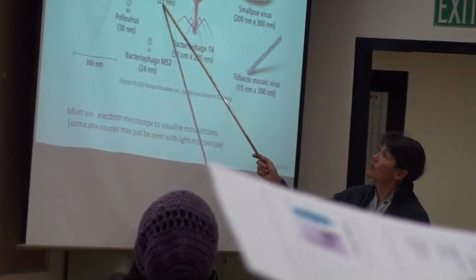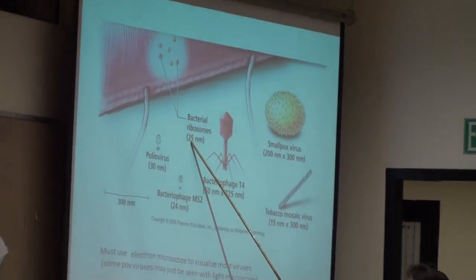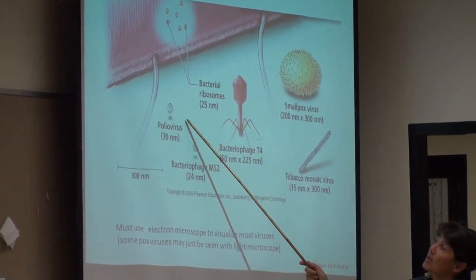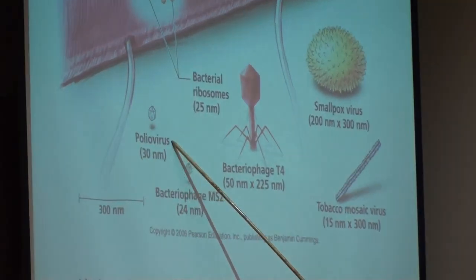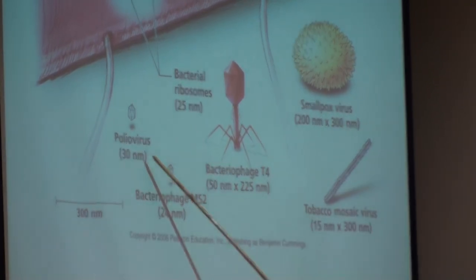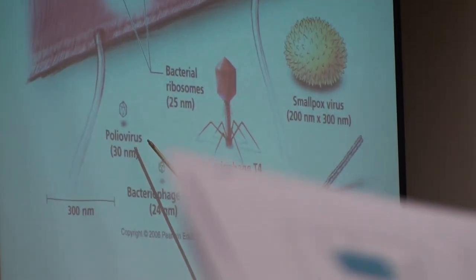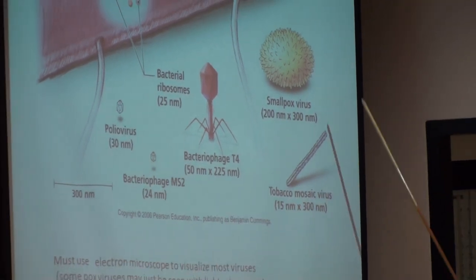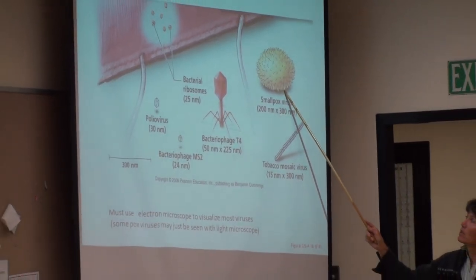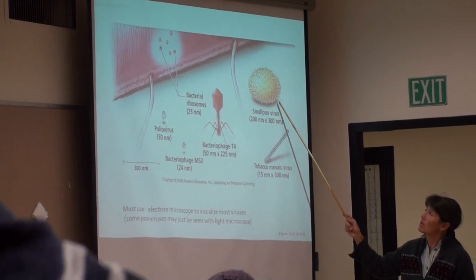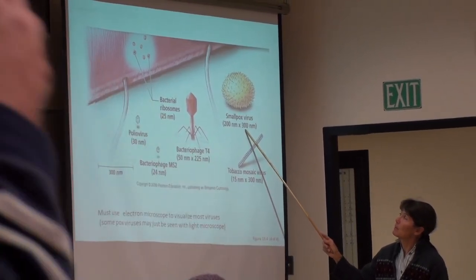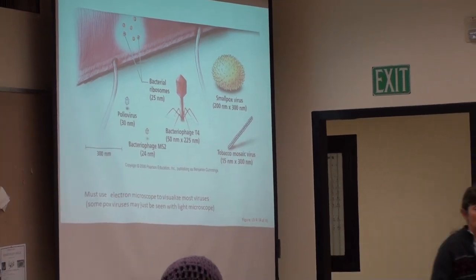To give an idea of the size range: ribosomes are around 25 nanometers. Some of the smallest viruses, like the poliovirus, are about the size of a ribosome — that's the low end of the range. At the high end, the smallpox virus belongs to the poxvirus family, one of the largest viruses at around 300 nanometers, which we might just barely be able to make out with a light microscope.